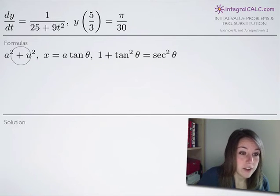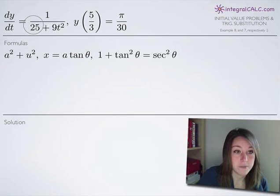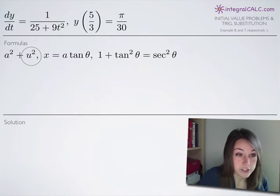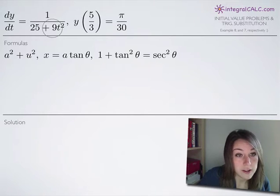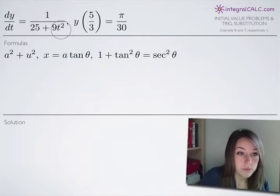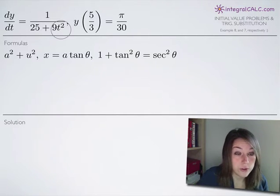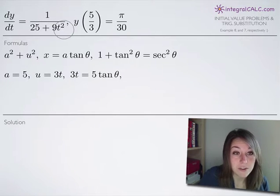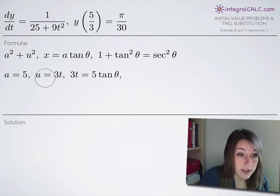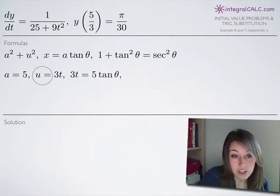We can identify that our trigonometric substitution identity is a² + u², where a represents the constant and u represents the variable. We have to identify the value of a and u by taking the square root of both terms. So a equals 5 (from √25) and u equals 3t (from √(9t²)).